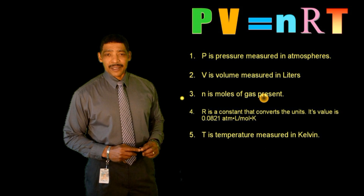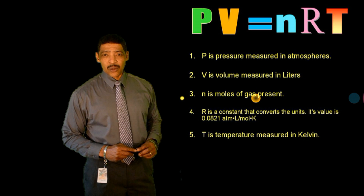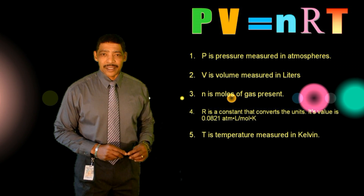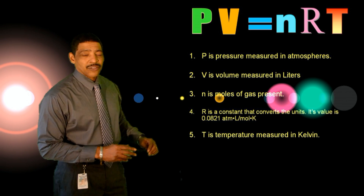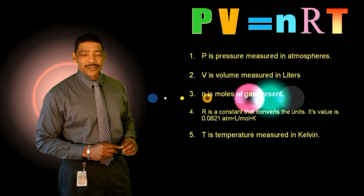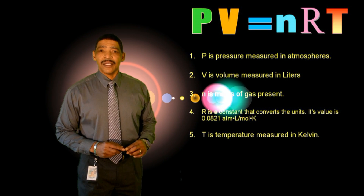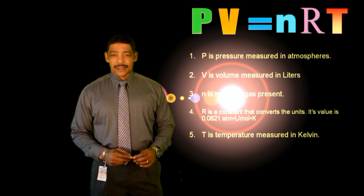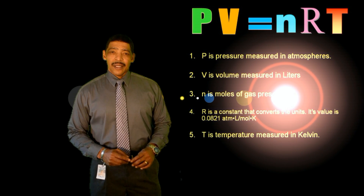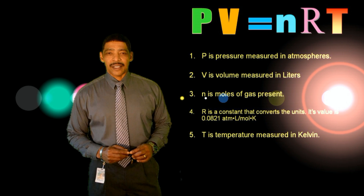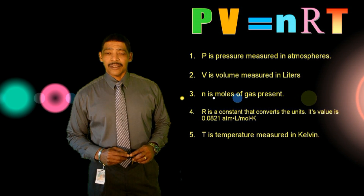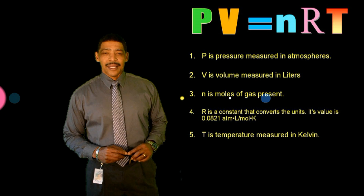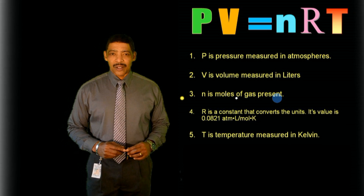Let's begin the lesson by examining the Ideal Gas Law equation, where according to the Ideal Gas Law, PV is equal to nRT. P represents the pressure of a gas in atmospheres, V represents the volume of a gas in liters, N represents the amount of a gas in moles. R represents the universal gas constant, 0.0821 atmospheres times liters divided by moles times K, and T represents the Kelvin temperature.